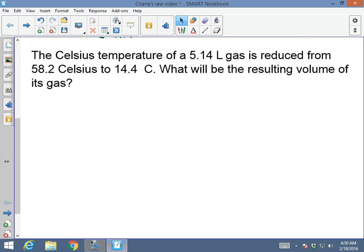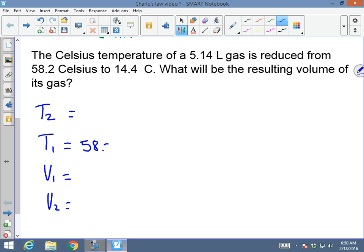Let me make a list of what I have. I have my T2, I have my T1, I have volume 1, and I have volume 2. The temperature from 58.2 Celsius plus 273 to make it Kelvin gives me 331.2 Kelvin.